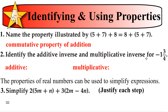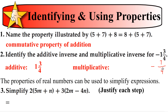Number 2 says identify the additive inverse and multiplicative inverse for negative 1 and 3 fourths. The additive inverse — we want to end up with the additive identity, which is 0. What do we add to this number to get 0? It's just the opposite, the positive value. For the multiplicative inverse, we need to convert to an improper fraction. It stays negative, the denominator stays 4, and the numerator is 1 times 4 plus 3, which is 7. So as an improper fraction it's negative 7 fourths. What do we multiply negative 7 fourths by to get 1? The reciprocal — negative 4 sevenths.